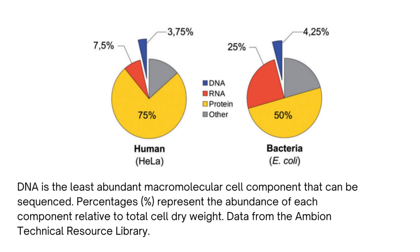DNA is the least abundant macromolecular cell component that can be sequenced. Percentages represent the abundance of each component relative to total cell dry weight. Data from the Ambion Technical Resource Library.